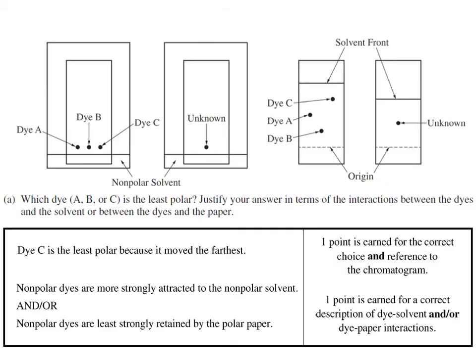Which dye is the least polar? From the scoring guidelines: dye C is the least polar because it moved the farthest. That earns one point. For the justification point, you could say that nonpolar dyes are more strongly attracted to the nonpolar solvent — mentioning both the dye and solvent are nonpolar — or that nonpolar dyes are least strongly retained by the polar paper.